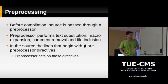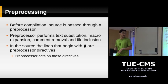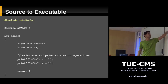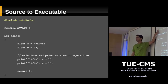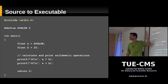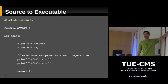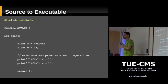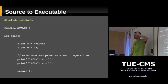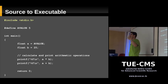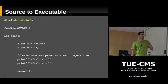Now we'll go to preprocessing. The preprocessor performs text substitution, macro expansion, comment removal, and file inclusion. Look at this first line: #include stdio.h. This is a preprocessor directive. What this directive tells the preprocessor is that stdio.h is a file which contains C source code. What the include does is it tells the preprocessor to take the entire contents of stdio.h and include it right there. If stdio.h in turn includes some other files, those are going to be included also.